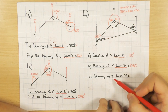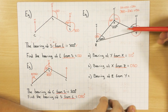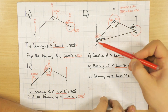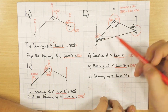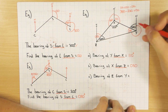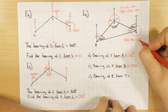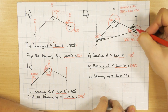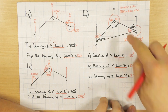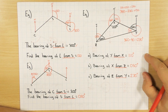Part C: bearing of Z from Y — from Y, north clockwise to Z. Angles in a triangle add to 180: 120 plus 40 equals 160, so the missing triangle angle is 20. Adding the exterior angle: 70 plus 20 equals 90, then 360 minus 90 gives 270 degrees. So the bearing of Z from Y is 270 degrees. Hopefully that helps for homework and revision!